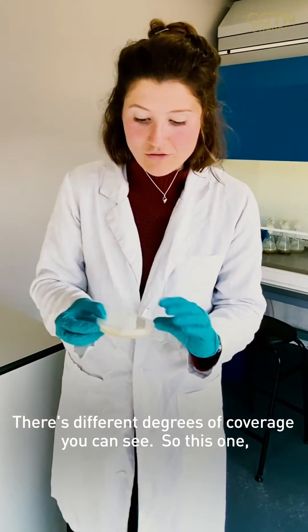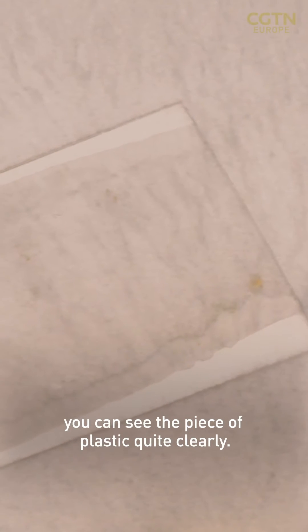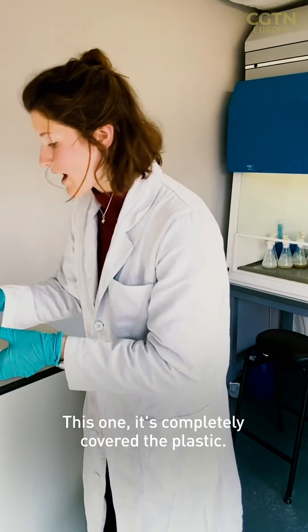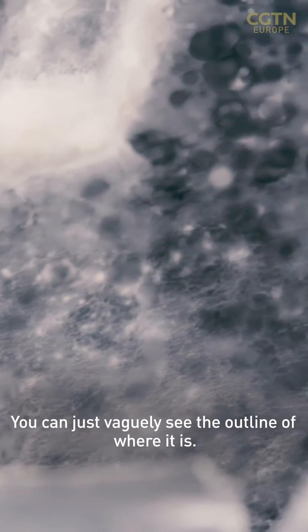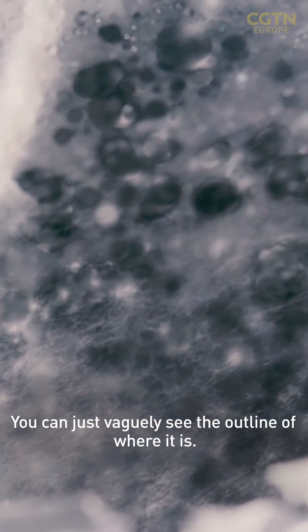There's different degrees of coverage you can see, so this one you can see the piece of plastic quite clearly. This one, it's completely covered the plastic. You can just vaguely see the outline of where it is.